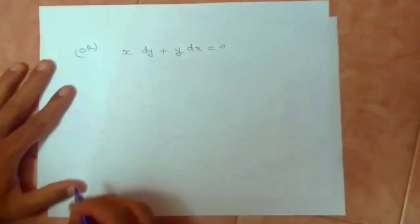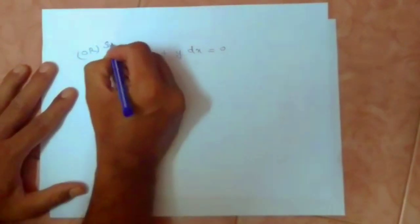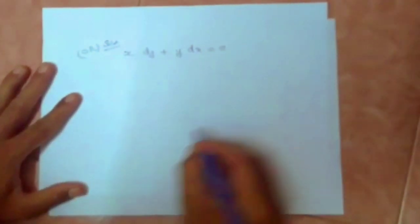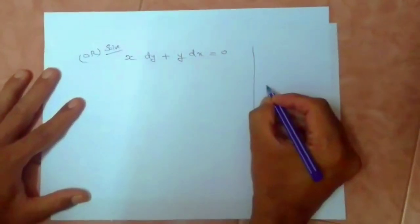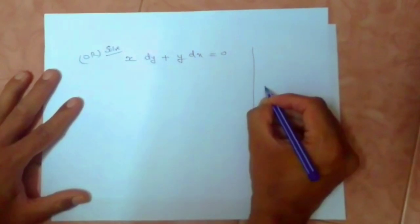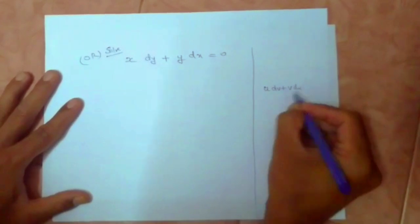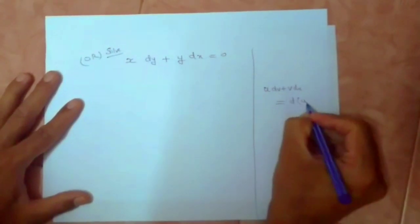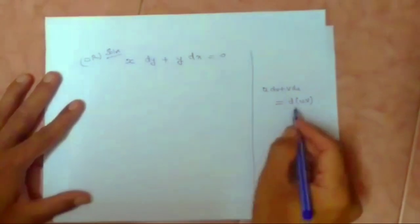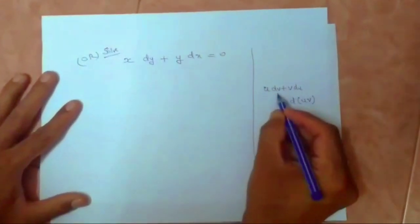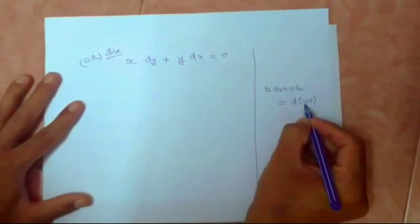Now we are going to do the same problem by yet another method. As you all know, the product rule of differentiation is u into dv plus v into du, which is nothing but differentiation of the product of two functions: d of uv.